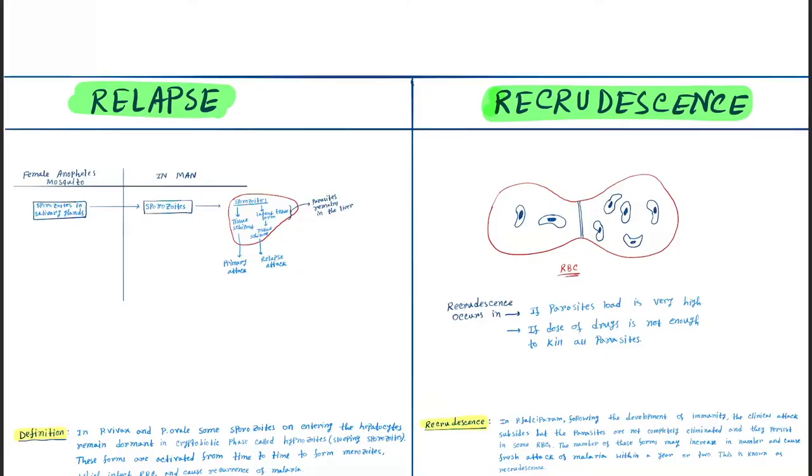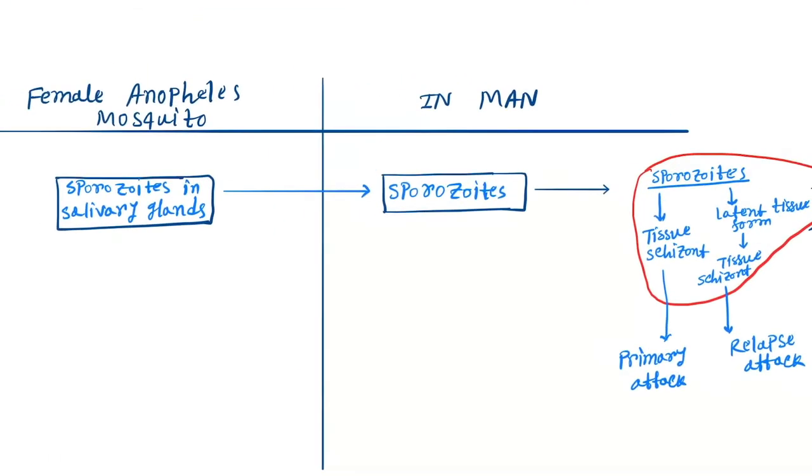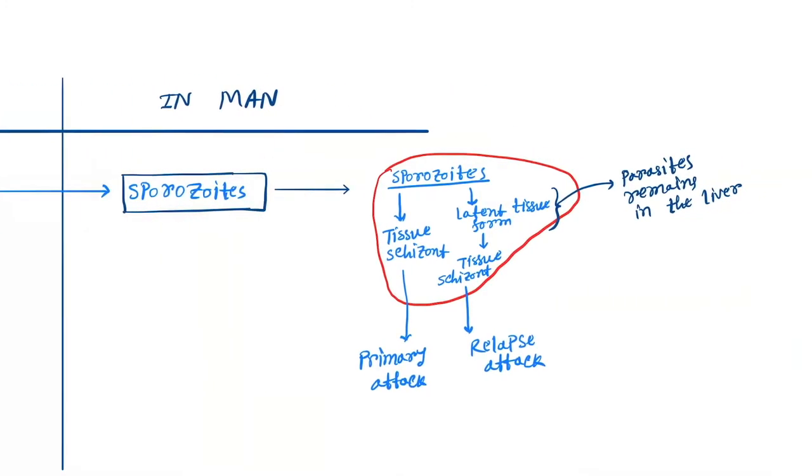Okay, so hello friends. Today our topic is relapse and recrudescence. So what is relapse? Relapse is when a female mosquito's sporozoids enter into the human body and then go to the liver.